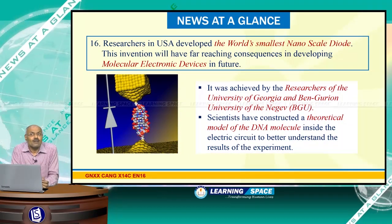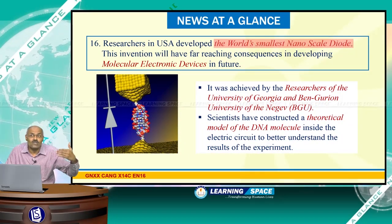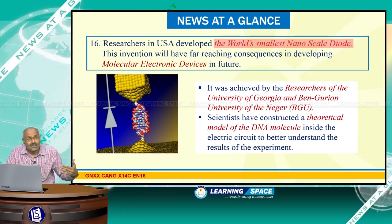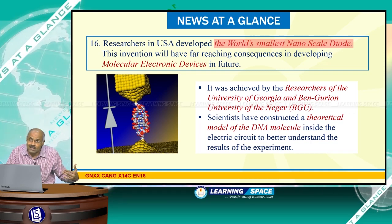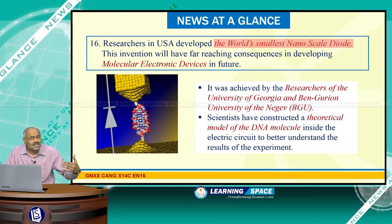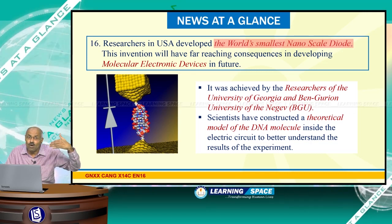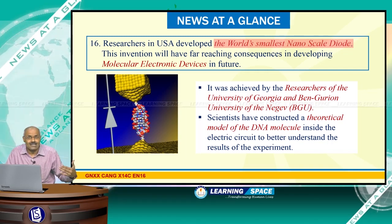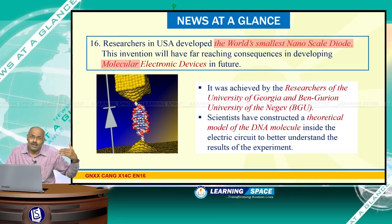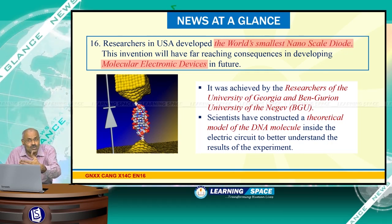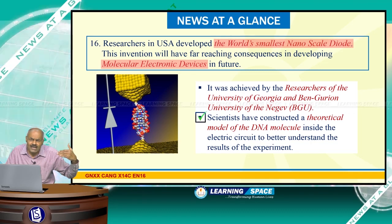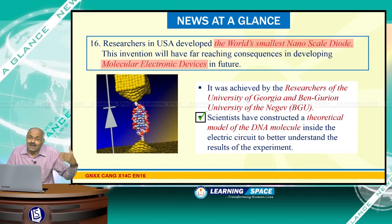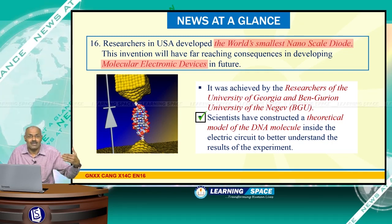Researchers in the USA developed the world's smallest nano-scale diode. A diode allows electricity only in one direction and blocks it in the other. This will have far-reaching consequences in developing molecular electronic devices in the future. Scientists also constructed a theoretical model of the DNA molecule inside an electric circuit to better understand the results of the experiment.